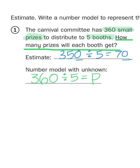35 tens divided by five is going to give me seven tens, or 70, because five times seven is 35. So my estimate is that my answer, my quotient, is going to be about 70 prizes per booth. So now I have to do the actual algorithm.